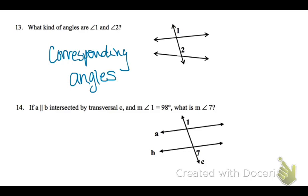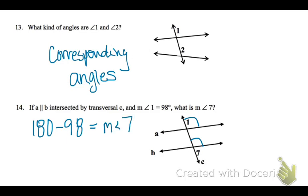On number 14, angles 1 and 7 are not corresponding, but the angle that is a linear pair with 7 is in a corresponding location — the ones that are marked. Therefore, angles 1 and 7 should also add up to 180, so if we subtract angle 1 from 180, we should get angle 7. So angle 7 is 82 degrees.